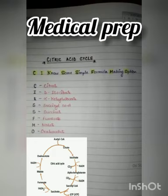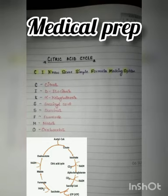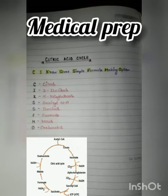This is the mnemonic — a simple formula. C stands for Citrate, I stands for Isocitrate, K stands for Alpha-Ketoglutarate, S stands for Succinyl Coenzyme A, S again stands for Succinate, F stands for Fumarate, M stands for Malate, and O stands for Oxaloacetate.